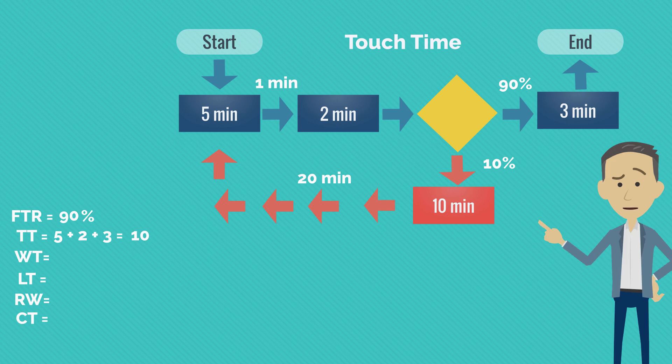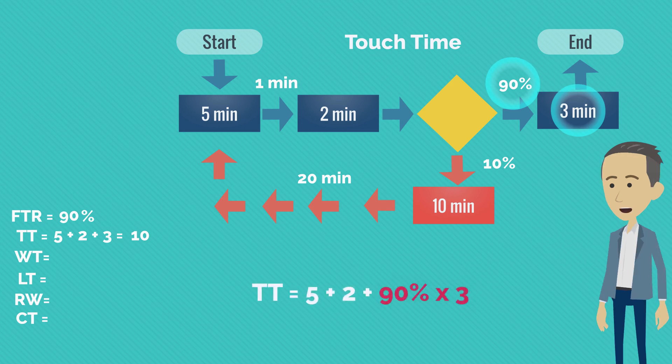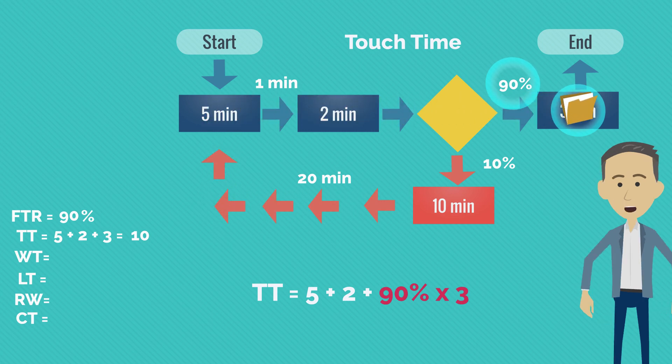some of you might be tempted to wrongly calculate 90% multiplied with 3 minutes. But I am sure that you remember from previous example how the 10 pieces that enter the rework loop eventually end up doing the 3 minutes. So in the end state, we will have 100% of the units reaching the final step of the process.